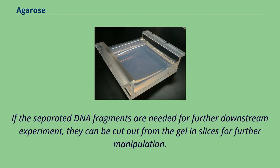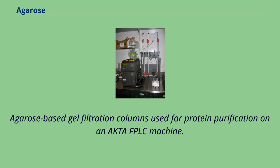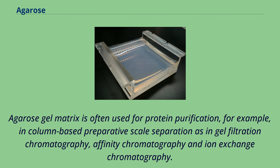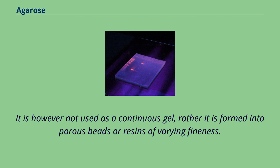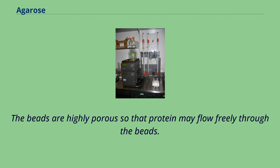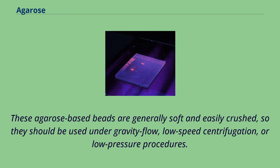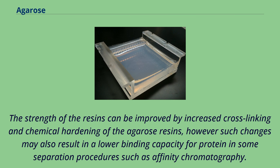If the separated DNA fragments are needed for further downstream experiments, they can be cut out from the gel in slices for further manipulation. Agarose-based gel filtration columns are used for protein purification on an ÄKTA FPLC machine. Agarose gel matrix is often used for protein purification in column-based preparative scale separation, such as gel filtration chromatography, affinity chromatography, and ion-exchange chromatography. It is not used as a continuous gel; rather it is formed into porous beads or resins of varying fineness. The beads are highly porous so that protein may flow freely through them. These agarose-based beads are generally soft and easily crushed, so they should be used under gravity flow, low-speed centrifugation, or low-pressure procedures.